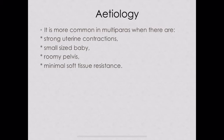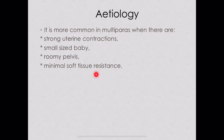Etiology of precipitate labor: it is more common in multiparas — those who have given multiple births previously. Causes in multiparas include strong uterine contractions, small-sized baby, roomy pelvis meaning there is enough space in the pelvis, and minimal soft tissue resistance, meaning the pelvic floor muscles offer very little resistance, so there is no obstruction and labor completes quickly.